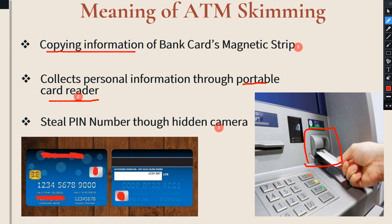In order to swipe our ATM card for withdrawing or performing a transaction, we enter into the ATM location, take our card, and insert our ATM card into the slot of this card reader. After inserting the card, the machine reads the information and then performs the further transaction.